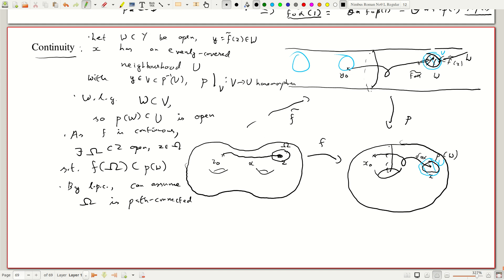So now what happens? Now let us pick a point z prime here. So let z prime belong to omega.